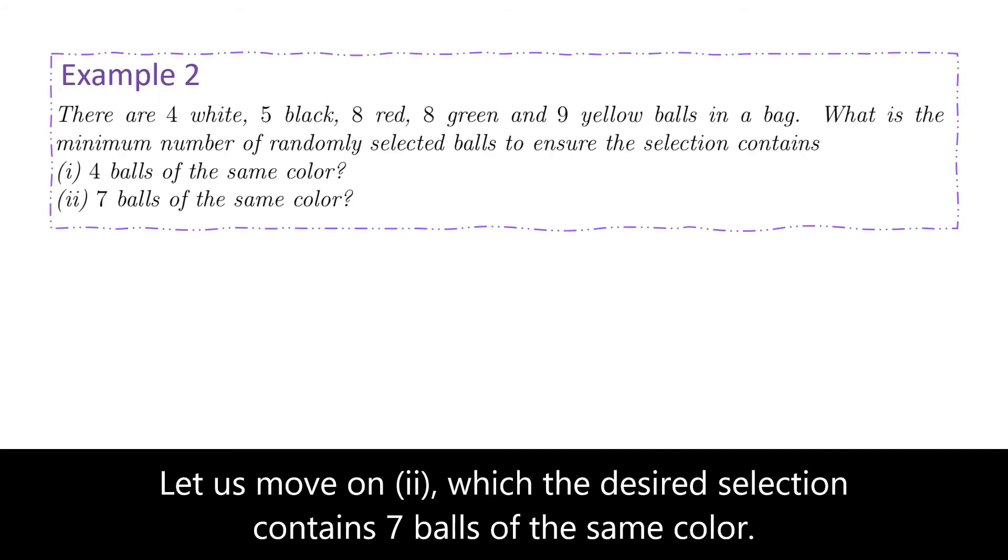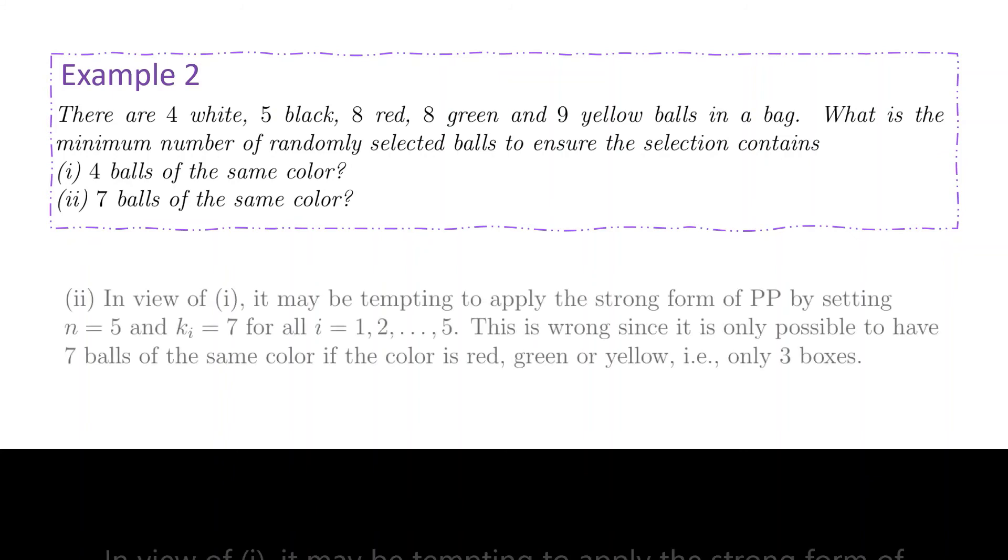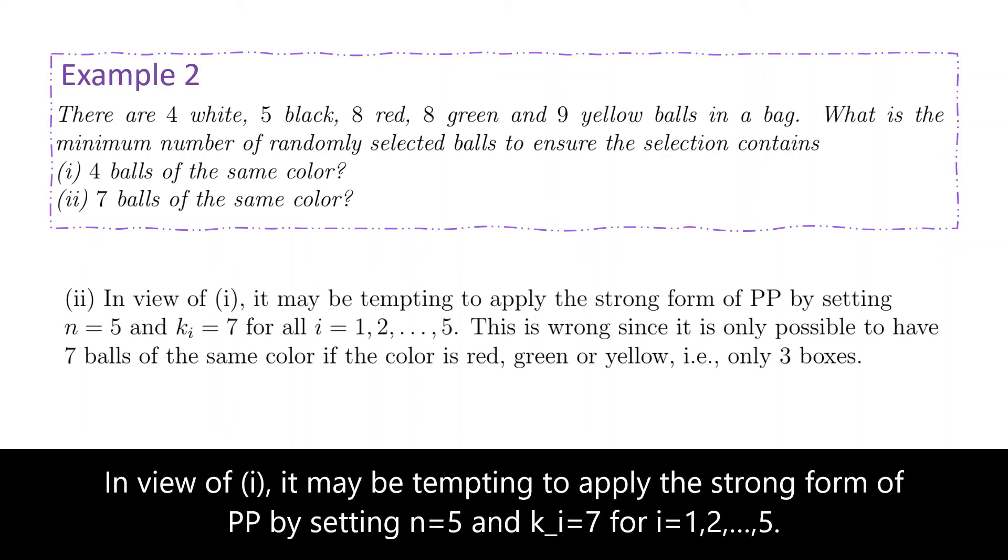Let us move on to Part 2, where the desired selection contains 7 balls of the same colour. In view of Part 1, it may be tempting to apply the strong form of pigeonhole principle by setting n equals to 5 and ki equals to 7 for all i.